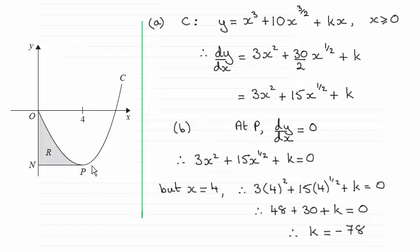So we know dy/dx from part a. All I've done is equate that to 0, and substituted x equal to 4 into here, and then just worked out the value of k. So k turns out to be minus 78.